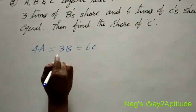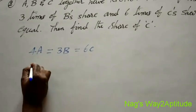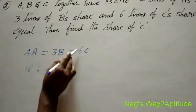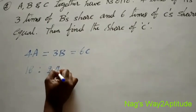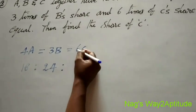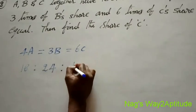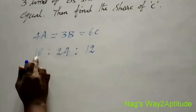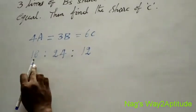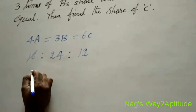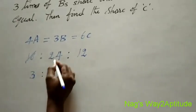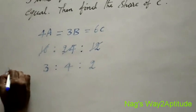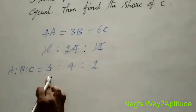For the a term, leave 4a and multiply the other two: 3×6=18. For the b term, leave 3b and multiply the other two: 4×6=24. For the c term, leave 6c and multiply the other two: 4×3=12. So we get 18 is to 24 is to 12. We can cancel 6: 18÷6=3, 24÷6=4, 12÷6=2. Therefore, a is to b is to c is equal to 3 is to 4 is to 2.